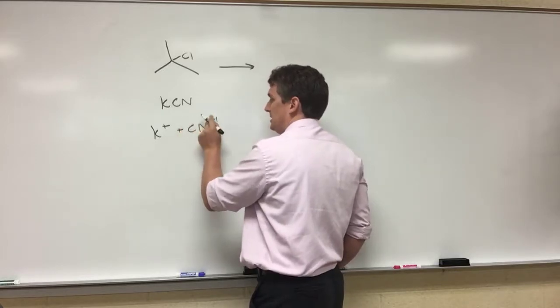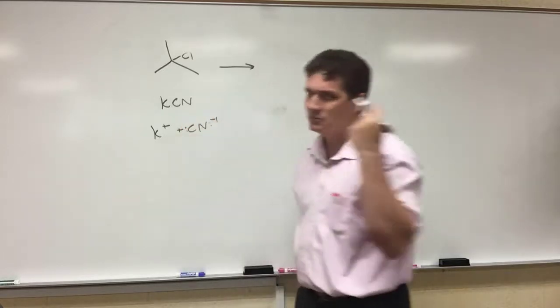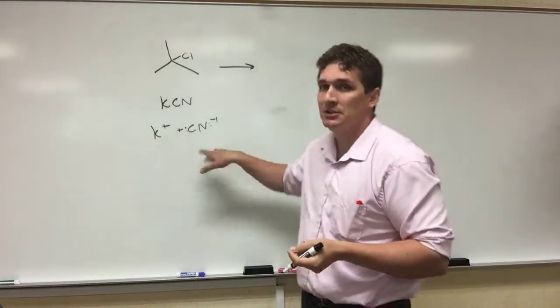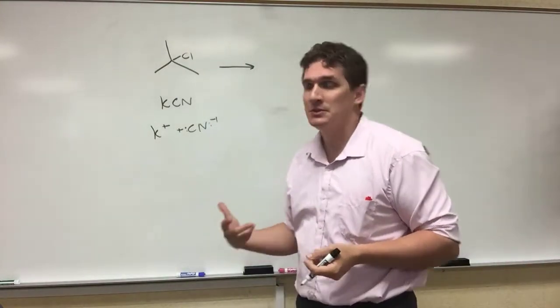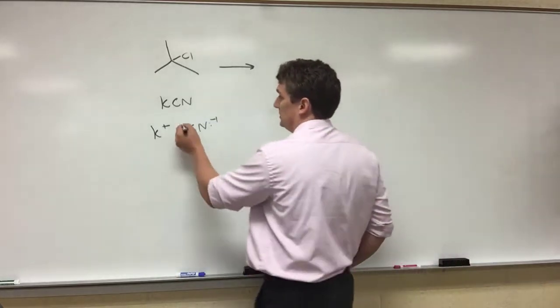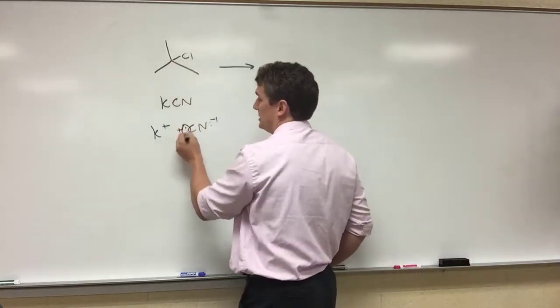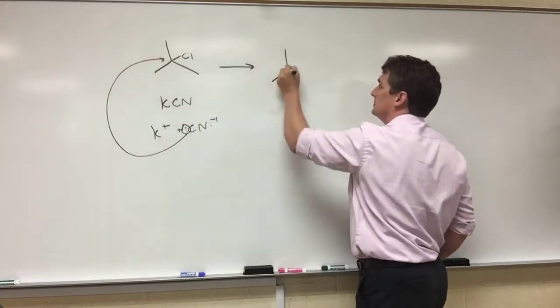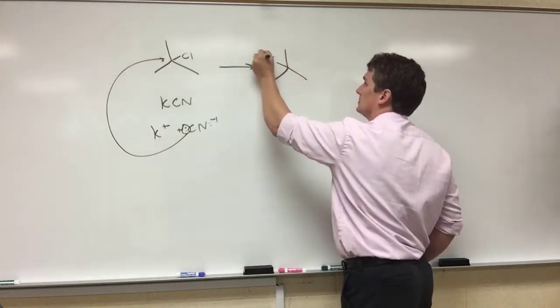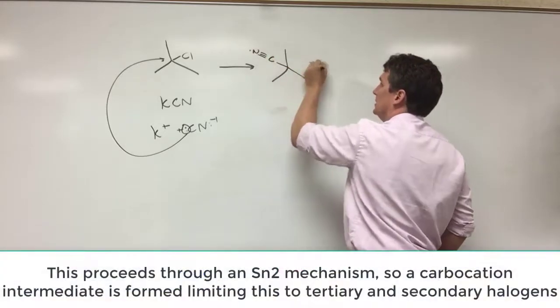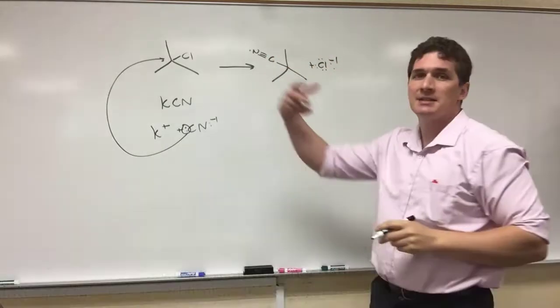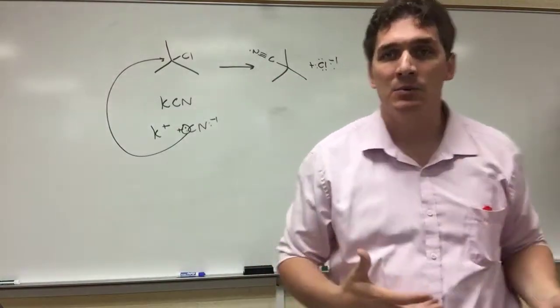So cyanide here is a really good Lewis base, and so what it will do in terms of our halogen alkane is we'll replace the chlorine and give us a cyanide group on the alkane that we're working with.